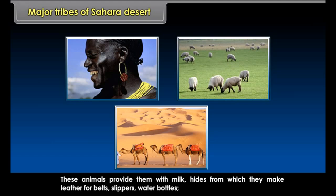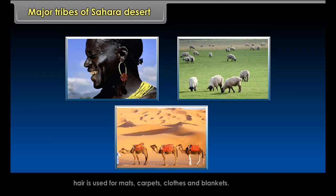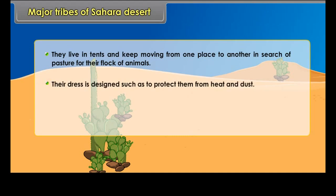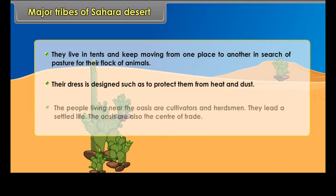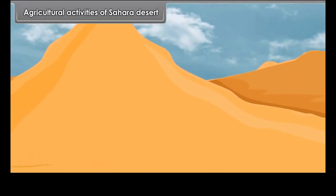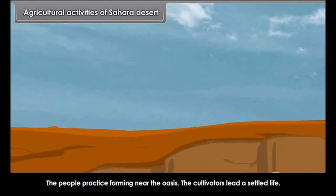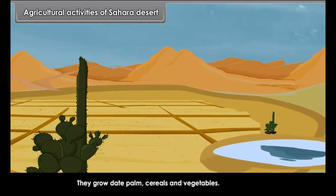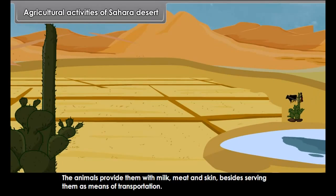The Bedouins are one of the major nomadic tribes of the Sahara Desert. Many of them engage in rearing sheep, goats and camels. These animals provide them with milk, hides from which they make leather for belts, slippers, and water bottles. Hair is used for mats, carpets, clothes and blankets. They live in tents and keep moving from place to place in search of pasture. The people living near the oasis are cultivators and herdsmen who lead a settled life.